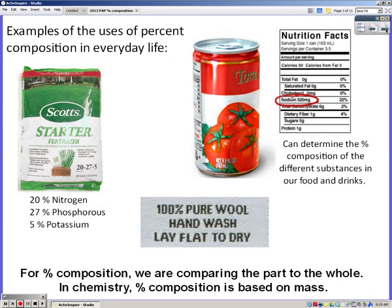We're talking about percent composition. You see percent composition in your everyday life in places such as fertilizer. At the bottom, that 20-27-5 is telling you the percentages of different elements in that fertilizer. On the nutrition facts of your food items, you'll see the percent by mass of different minerals in your food.